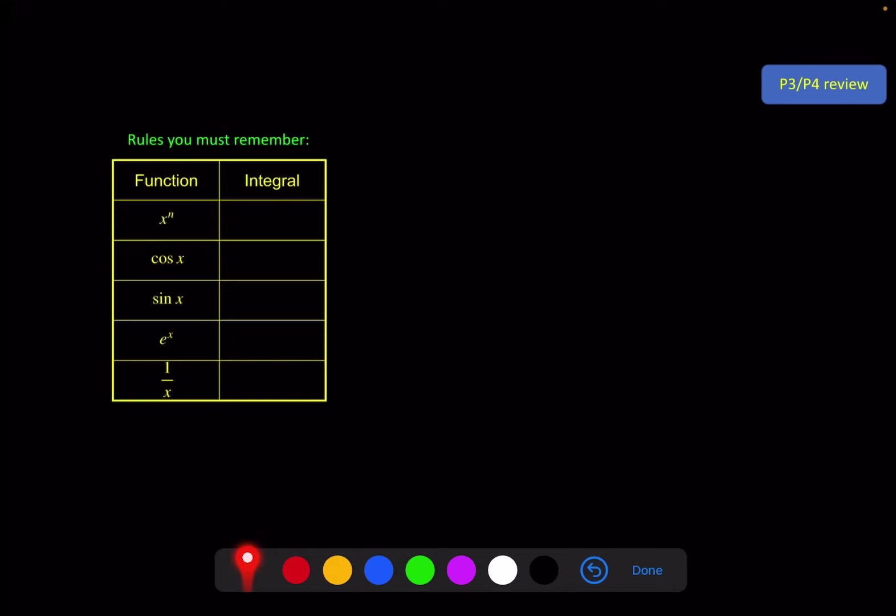On the screen, some key functions you need to remember how to integrate. Pause the video now and fill this in if you've got time. The first one, increase the power by one and divide by the new power. Cosine integrates to give sine. Sine integrates to give minus cosine. E to the x is the easy one, integrates to give itself. And 1 over x integrates to give natural log of x.